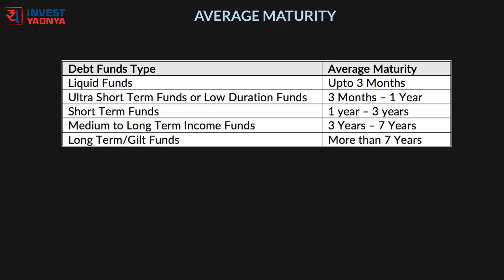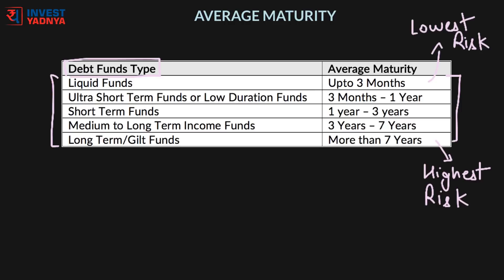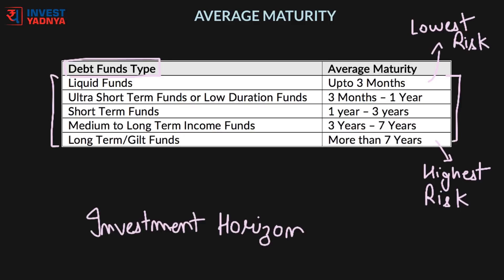This is how we can classify debt funds based on average maturity. Debt funds of a particular category make sure they keep on changing the debt portfolio to keep the average maturity within a specified range always. Please note: longer the average maturity, higher the risk associated with a debt fund. So while shortlisting a debt fund, you need to consider your investment horizon as the starting point and align it with the average maturity of the fund to ensure it is in line with your time horizon.